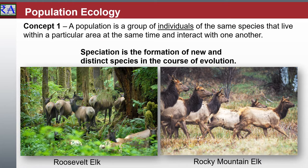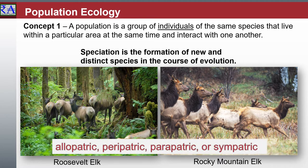He also identified sexual selection as a likely but problematic mechanism. There are four geographic modes of speciation in nature, based on the extent to which speciating populations are isolated from one another: allopatric, peripatric, and sympatric.